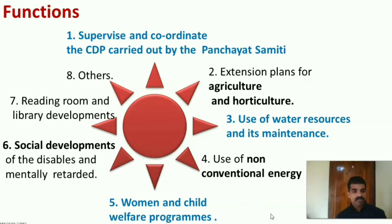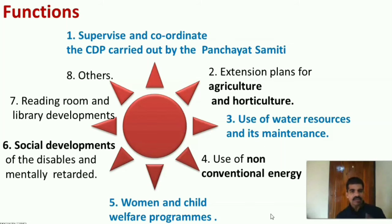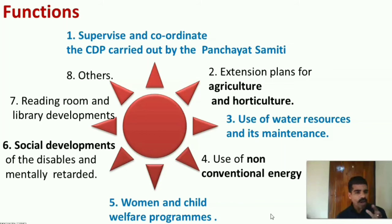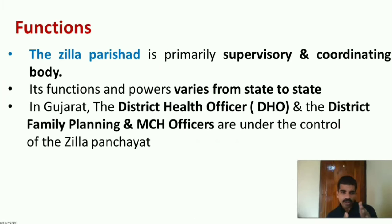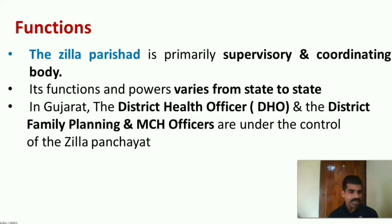Functions of Zilla Parishat: First, supervise and coordinate the community development programs carried out by the Panjayat Samadhi. Second, extension plans for agriculture and horticulture in the district. Third, use of water resources and its maintenance. Fourth, use of non-conventional energy resources. Fifth, women and child welfare programs and RCH programs. Sixth, social development of the disabled and mentally retarded in the district. Seventh, providing facilities for reading rooms and libraries, and other functions. In short, Zilla Parishat is primarily a supervisory and coordinating body, and its functions and powers vary from state to state. In Gujarat, the district health officer (DHO) and the district family planning and MCH offices are under the control of the Zilla Panjayat.